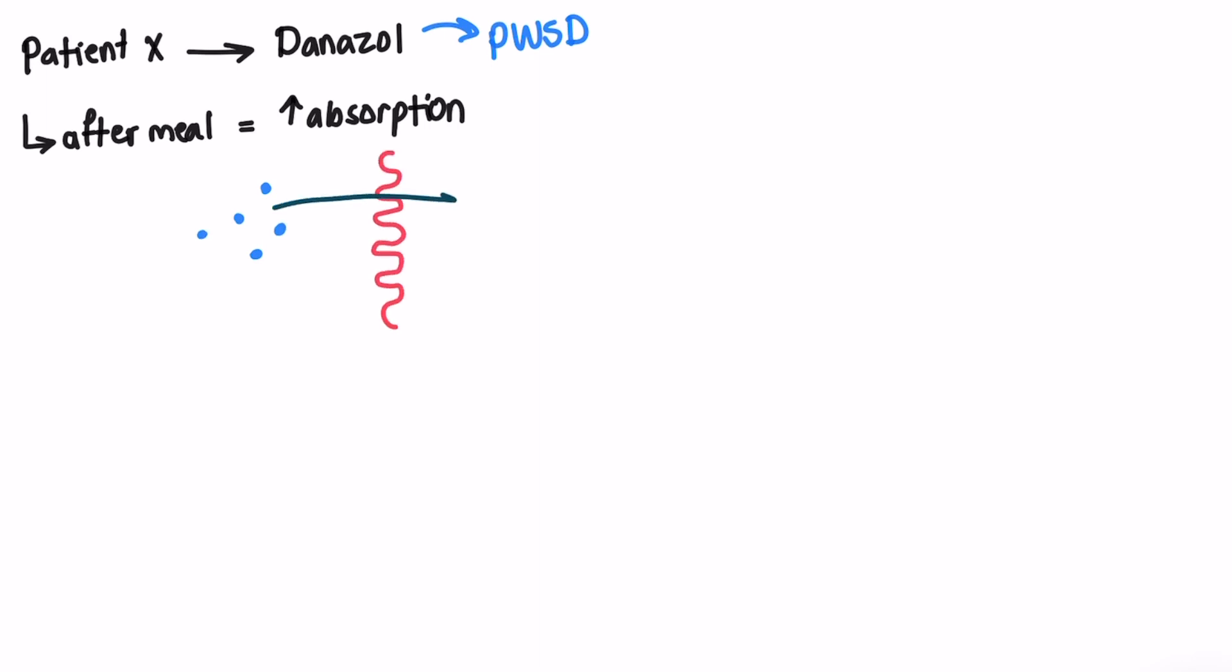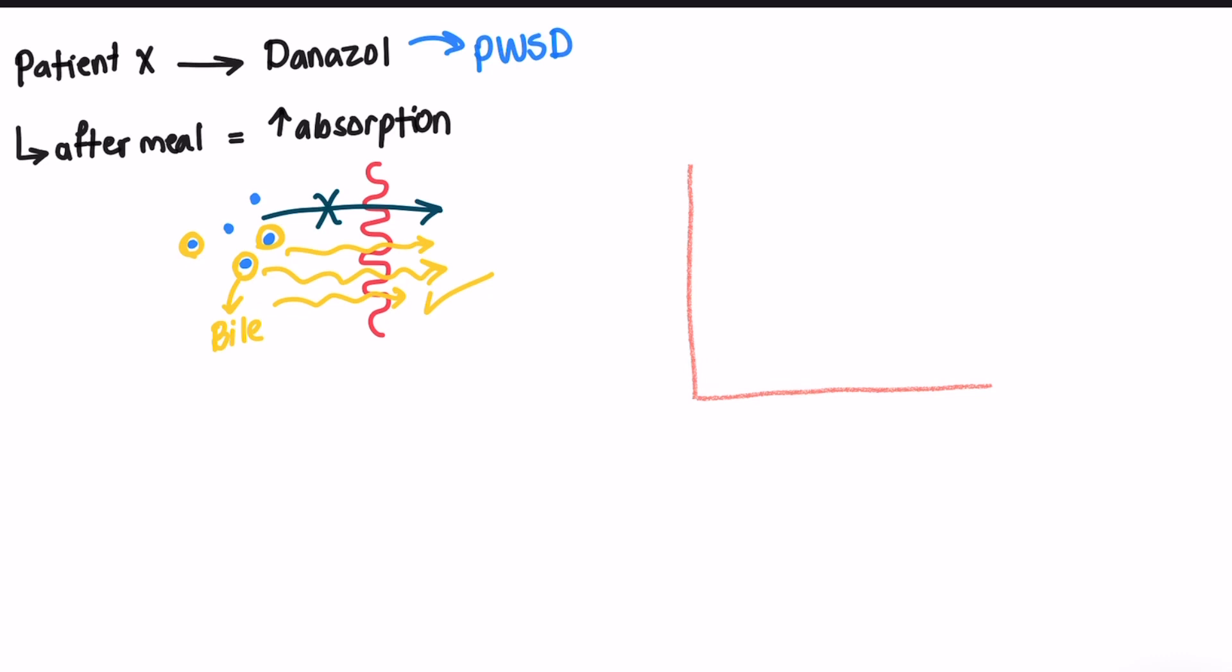Imagine patient X taking danazol. If she takes it immediately after her lunch, what will happen is more danazol will be absorbed because food in the GI will increase the release of bile from the gallbladder, a normal physiological response. Bile contains some surfactants that solubilize fats and poorly water-soluble drugs, thus increases the absorption of these drugs across the GI wall, and results in a plasma profile like this one here.